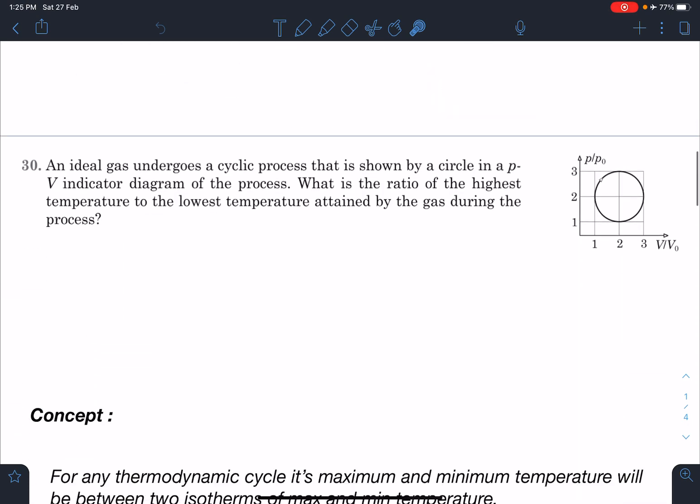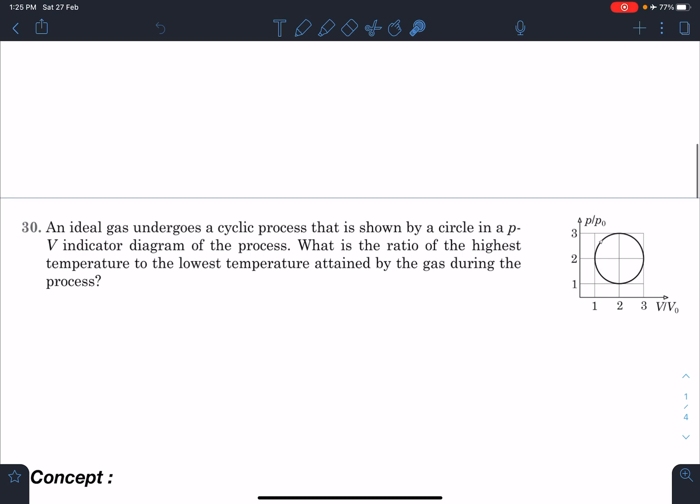Here is the statement of this problem. An ideal gas undergoes a cyclic process that is shown by a circle in a P-V indicator diagram of the process. What is the ratio of highest temperature to the lowest temperature attained by the gas during the process? As you can see here, the graph on the y-axis is P/P₀ and this is V/V₀.